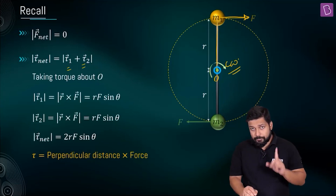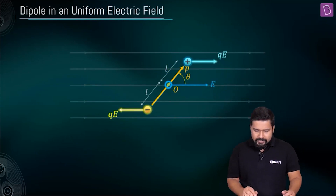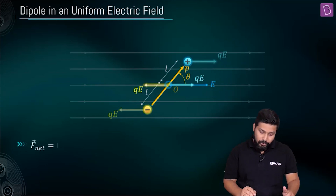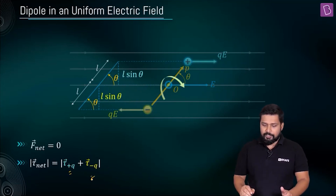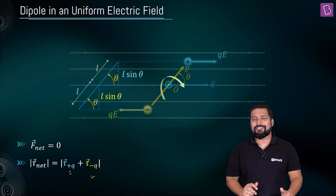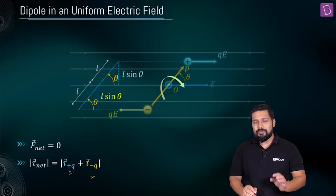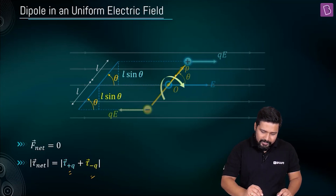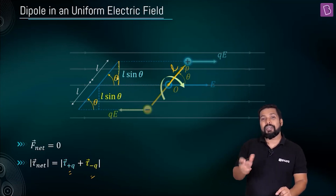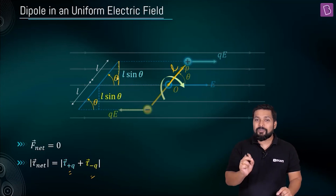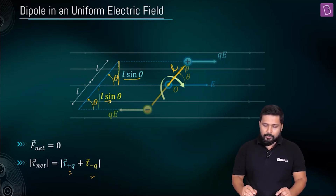Now a similar situation is here. In this case also, if you consider the dipole as a system, the net force acting on the system is equal to zero. The net torque will be the torque on the positive charge plus the torque on the negative charge, and the sense of rotation is in the clockwise direction. To write the value of the torque, we need the perpendicular distance. This length from center to charge is equal to L, so the perpendicular distance is L sinθ. And even for the negative charge, it is equal to L sinθ.